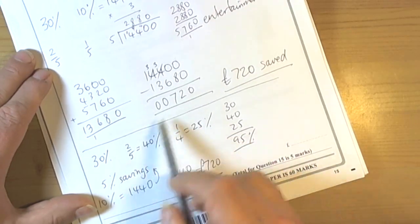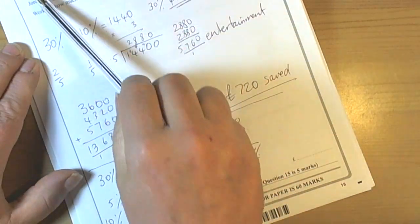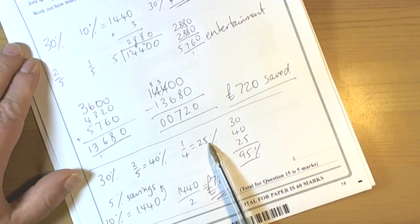But there's an alternative way. If you look at the information, we could do this way as well, working out the percentages that were actually used and what was left for savings.